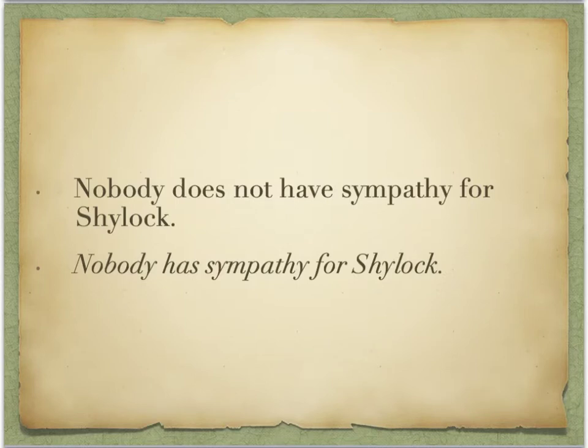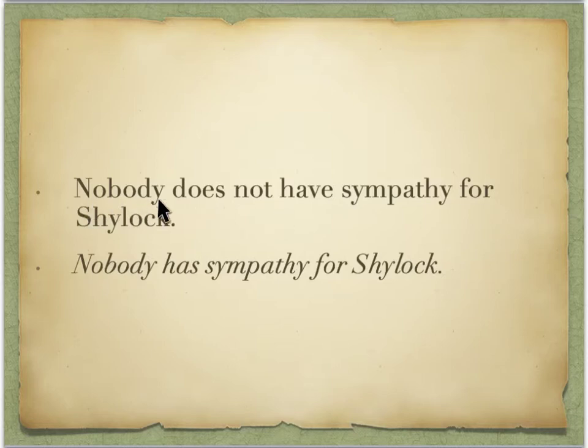This is another common error. We have the negative in 'nobody' and then the negative in 'does not have sympathy.' In many languages, double negatives provide emphasis. However, in English, it has the opposite effect — this negative contradicts this negative. So the ultimate meaning of the sentence is that everybody has sympathy for Shylock, because nobody does not. If you wanted to say what I think the student is trying to say, you would need to say: nobody has sympathy for Shylock.